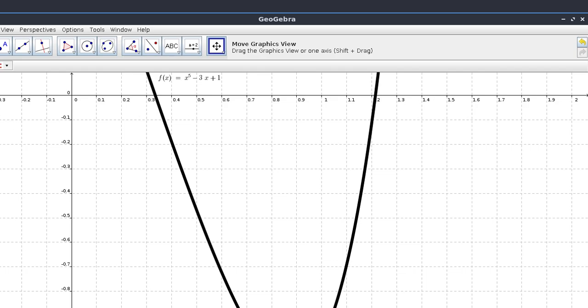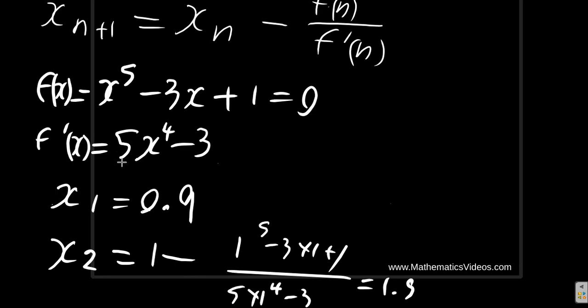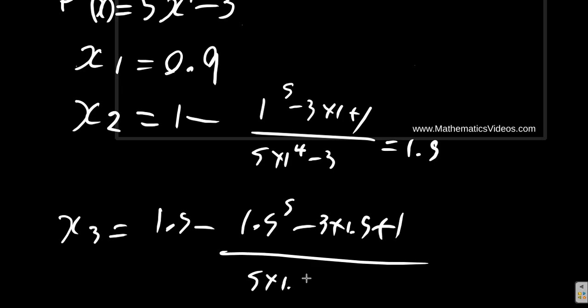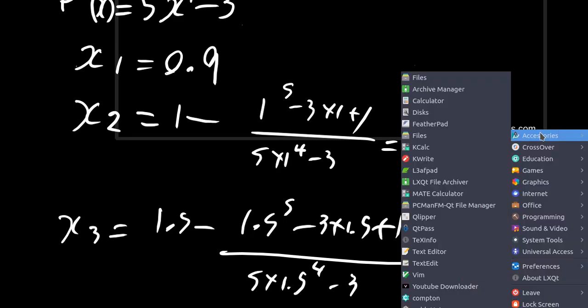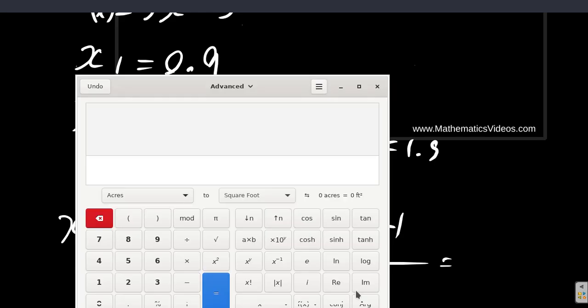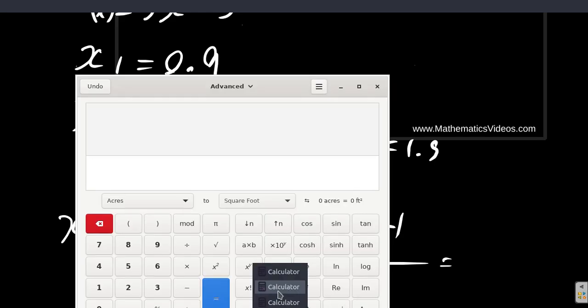Now, if we use 1.5 as our x3, x3 equals 1.5 minus 1.5 to the 5th minus 3 times 1.5 plus 1 over 5 times 1.5 to the 4th minus 3 equal. Let's get back to our calculator and see what happens.